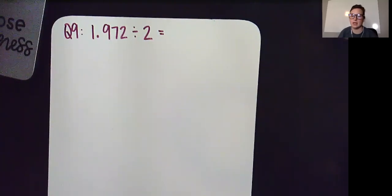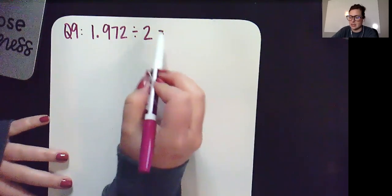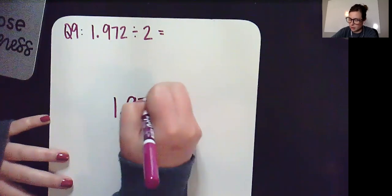Question 9. 1 and 972 thousandths divided by 2. This is a whole number, my divisor, so I am good to go. Don't need to move anything around.